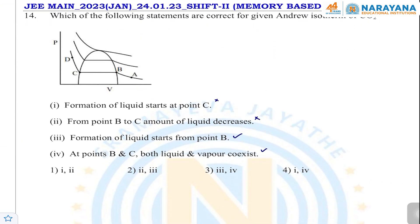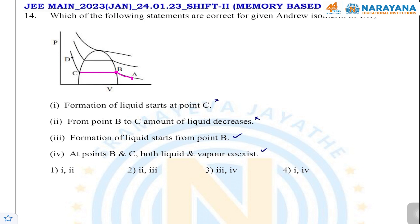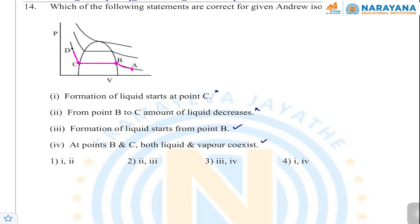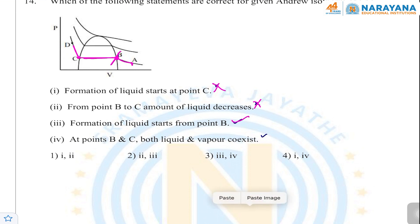The next question is on liquefaction of gases. A real gas at point A has its pressure increased; liquefaction starts at point B, with equilibrium between vapor and liquid phases from B to C. At point C, all gas is converted to liquid, with small volume changes on further compression. Formation of liquid starts at point B — correct. From B to C, the amount of liquid increases (not decreases). At points B and C, both liquid and vapor coexist in equilibrium.